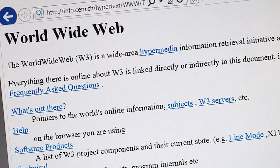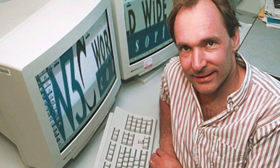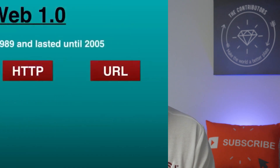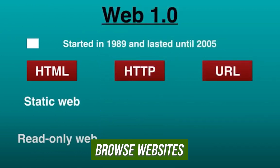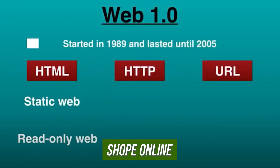The first iteration of the Web represents Web 1.0, which according to Tim Berners-Lee, the creator of the World Wide Web, is the read-only Web. At that time users had limited options, such as browsing websites, exchanging emails, shopping online, and advertising.